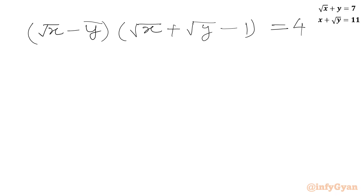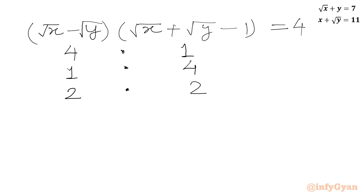So we have root x minus root y times root x plus root y minus 1 equal to 4. Now we will find the factorizations of 4. If root x minus root y is 4 and the second bracket is 1, we get product 4. If root x minus root y is 1 and the second bracket is 4, we get product 4. If this is 2 and we multiply with 2, we also get product 4.